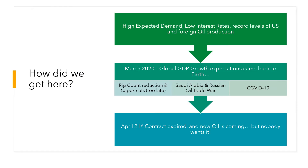How did we get here? It starts with high expected demand for oil driven by lofty expectations of global GDP growth in both emerging and developed markets. We also had record low and even negative interest rates fueling a corporate debt bubble, allowing oil companies that otherwise wouldn't have qualified for loans to take on debt and produce record levels of oil.